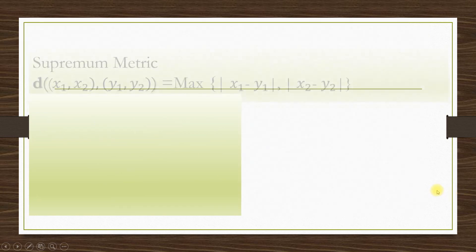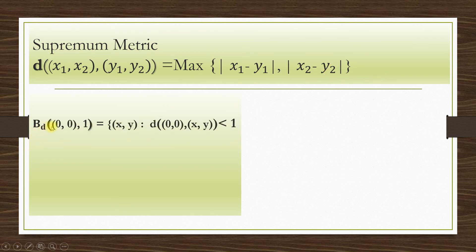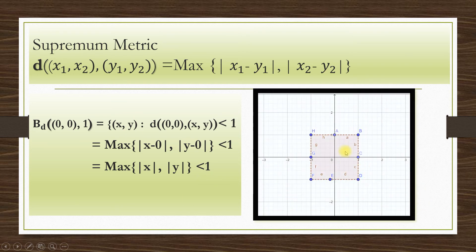Moving on to the next example: the supremum metric, also called the maximum metric. Its definition is d((x1, y1), (x2, y2)) = max(|x1 − x2|, |y1 − y2|). Consider the open ball with center (0, 0) and radius 1. By the definition of the metric, this equals the set of all (x, y) such that max(|x|, |y|) < 1. The corresponding figure is shown here.